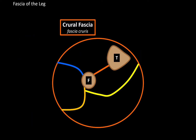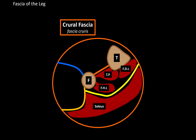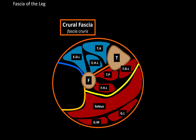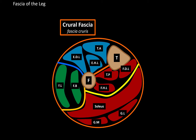Deep in the posterior compartment we find muscles like the tibialis posterior, flexor hallucis longus, and flexor digitorum longus. Superficially, we find the soleus, gastrocnemius lateralis, and gastrocnemius medialis. In the anterior compartment are the tibialis anterior, extensor hallucis longus, and extensor digitorum longus. In the lateral compartment are the fibularis brevis and fibularis longus.